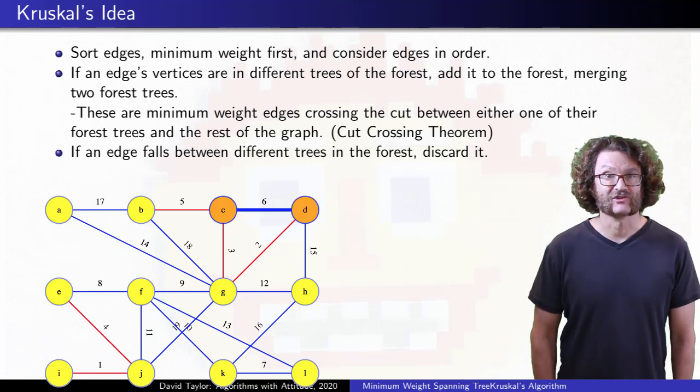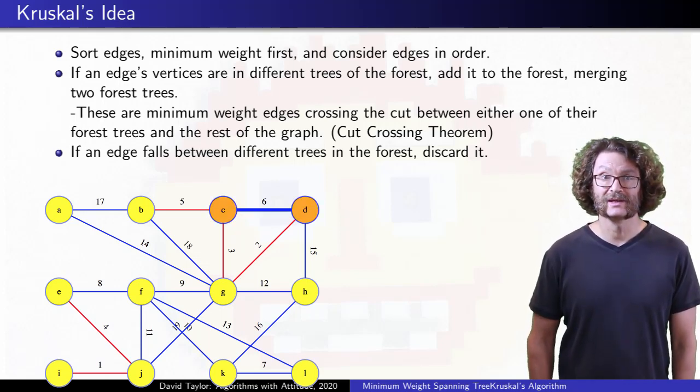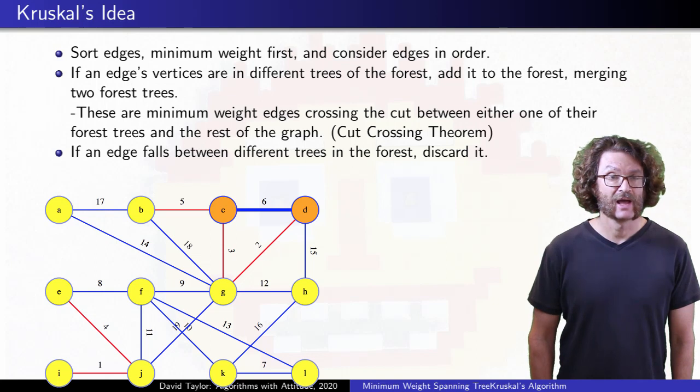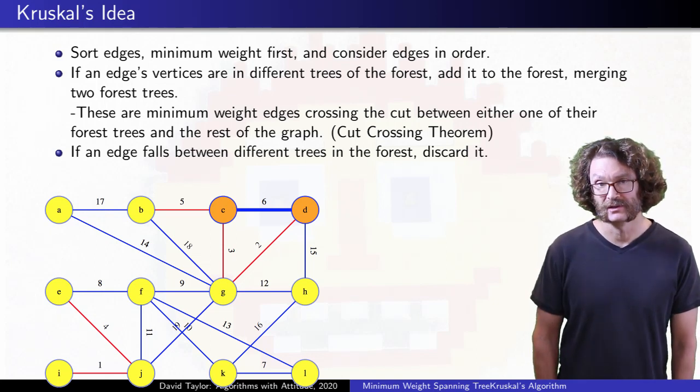How about when we get to edge 6, and it connects two edges already in the same forest tree? How do we justify discarding it?